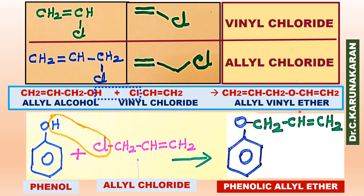How are allyl vinyl ether and phenolic allyl ethers obtained? When allyl alcohol reacts with vinyl chloride, it gives allyl vinyl ether. Similarly, phenol reacts with allyl chloride to give phenolic allyl ether.